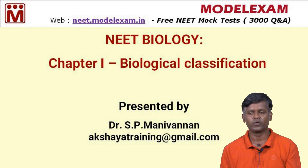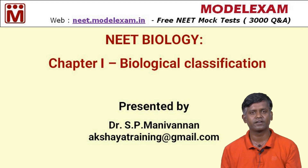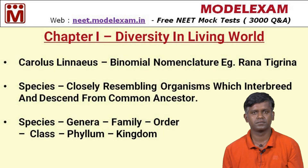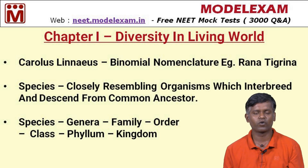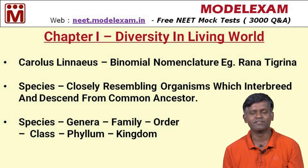Today we are going to discuss the first unit: living world, biological classification, and plant kingdom. Life consists of growth, metabolism, and reproduction. For life to be stable, it has to be maintained in a homeostasis pattern. Before going into the deeper aspects, let's discuss what is diversity in the living world.